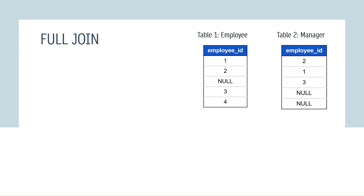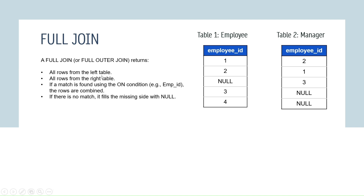Let's now move on to the full join, also known as full outer join. A full join returns all the rows from the left table and all the rows from the right table. If a match is found using the ON condition, the rows are combined. If there is no match, it fills the missing side with NULL.